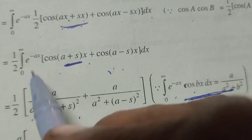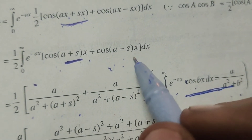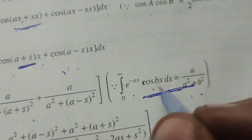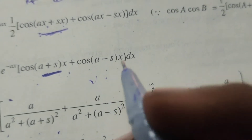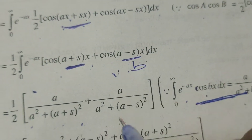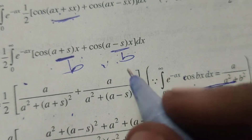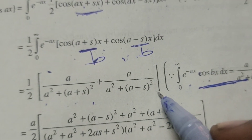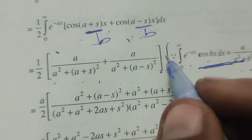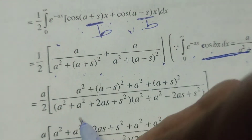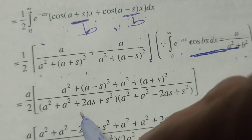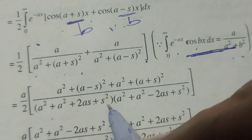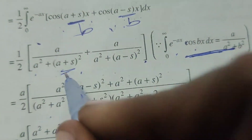Again, integral from 0 to infinity of e power minus ax cos of a minus s into x dx. Applying the same formula a by a square plus b square, where b means a minus s. Therefore we get a by a square plus a minus s whole square. Now simplifying: a plus s whole square means a square plus 2as plus s square, and a minus s whole square means a square minus 2as plus s square, by the a plus b and a minus b whole square formulae.